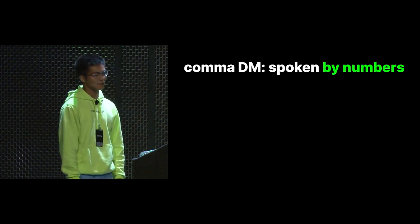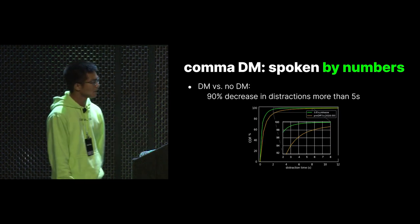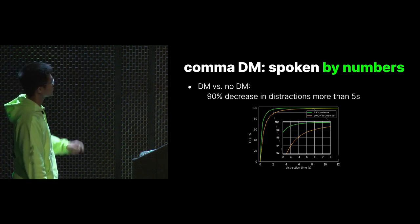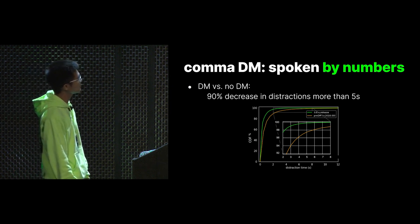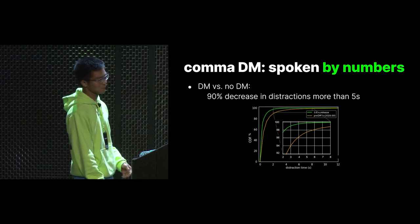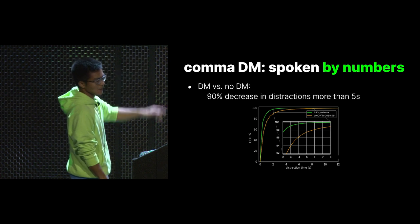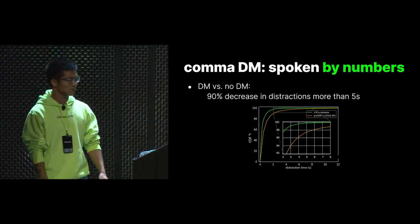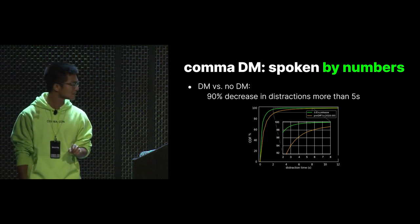Now that we have the problem in mind, let's fast forward and take a quick peek at what Comma DM has achieved so far by looking at some numbers. The first is a comparison between having DM and no DM, showing the cumulative distributions of distraction durations between current DM data and data we had before we shipped OpenPilot DM. In recent data, 99.7% of distracted events are less than five seconds, while in the old data this number is 97.4%, which means DM has managed to reduce distractions of more than five seconds by 90% — which is substantial.